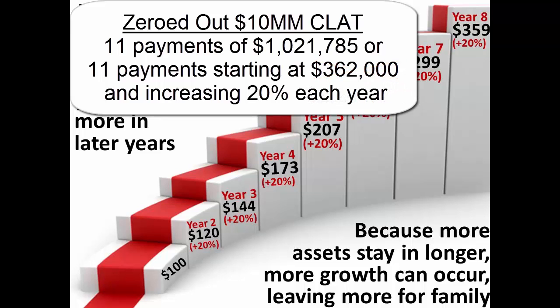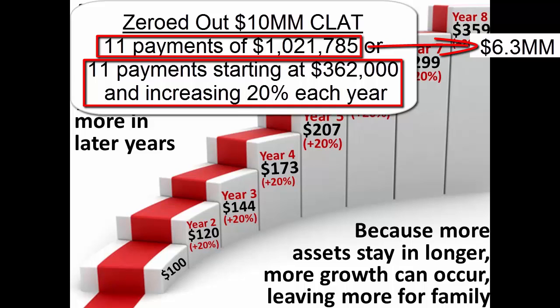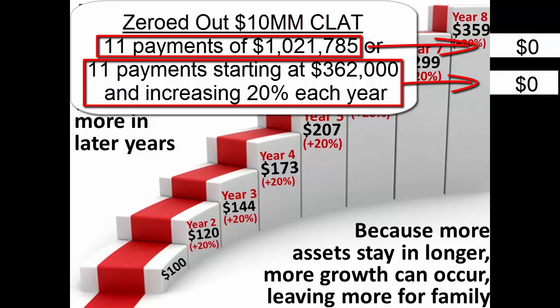If trust assets grew at 8% annually instead of the 2% initial 7520 interest rate, the standard flat payout annuity in a zeroed-out non-grantor charitable lead trust would leave $6.3 million for the heirs. But the 20% annual increasing step annuity in a zeroed-out non-grantor charitable lead trust would leave $7.9 million. This extra $1.6 million in tax-free transfer results from keeping the faster-growing assets in the trust longer. However, if the assets underperformed the 2% initial Section 7520 interest rate, both the traditional annuity and the step annuity would exhaust the trust and the heirs would receive nothing.